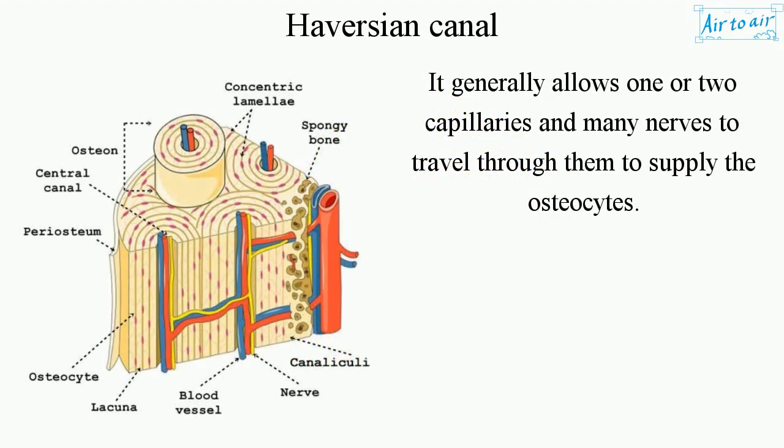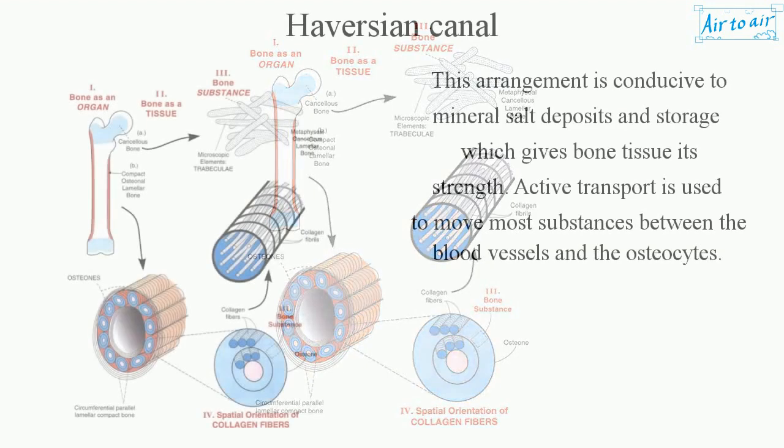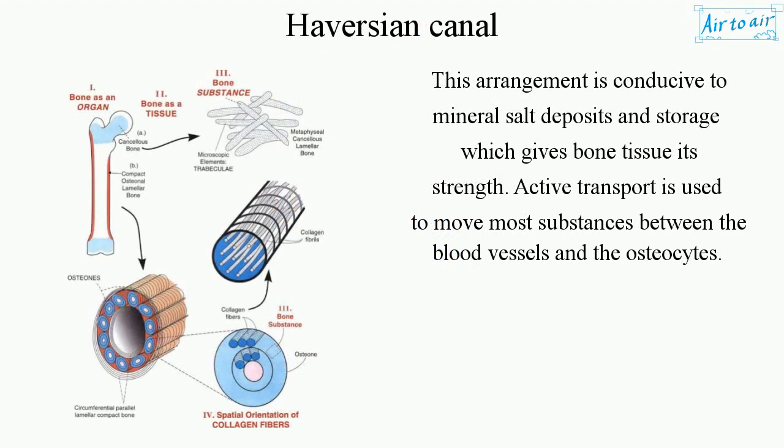It generally allows one or two capillaries and many nerves to travel through them to supply the osteocytes. This arrangement is conducive to mineral salt deposits and storage, which gives bone tissue its strength. Active transport is used to move most substances between the blood vessels and the osteocytes.